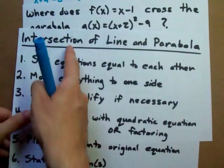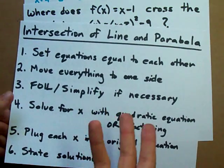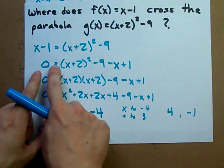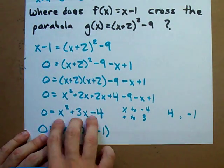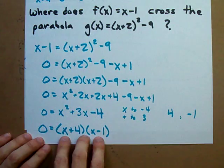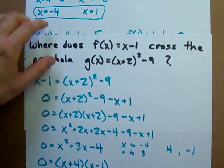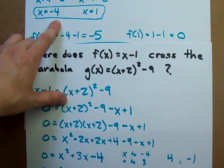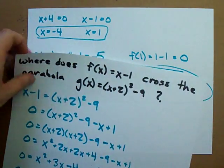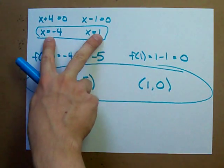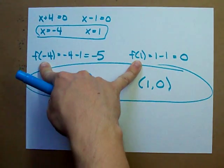Again, it's a fairly long process, but you're going to have to be able to do it. Set them equal to each other and move everything to one side. Simplify it so that it looks nice and pretty. Then, either factor it to solve for x or use the quadratic equation. And it'll just give you these two numbers right off the bat.